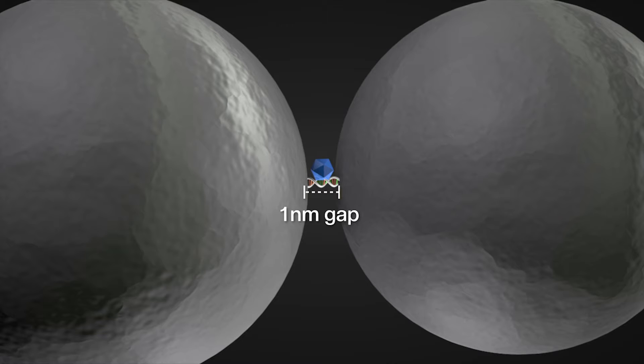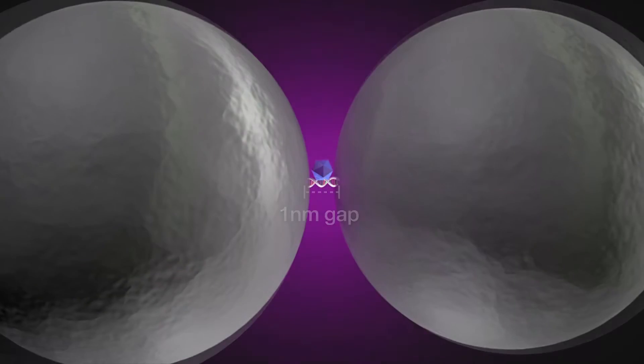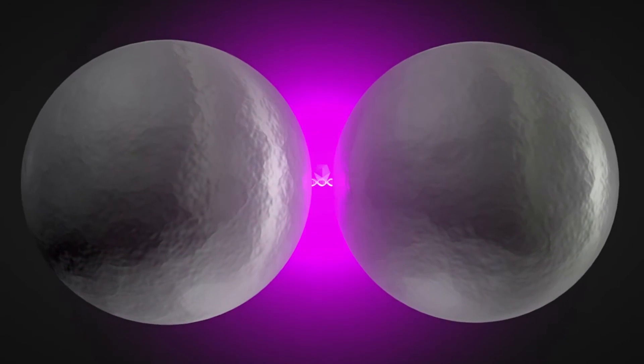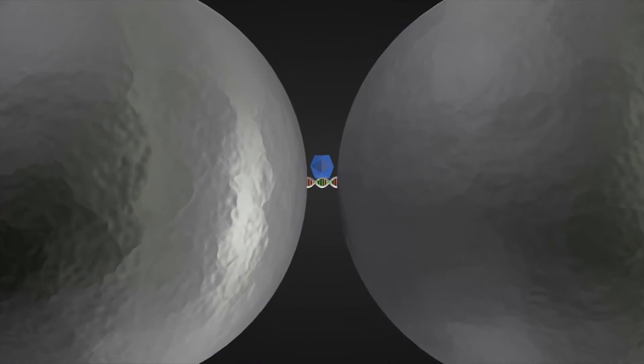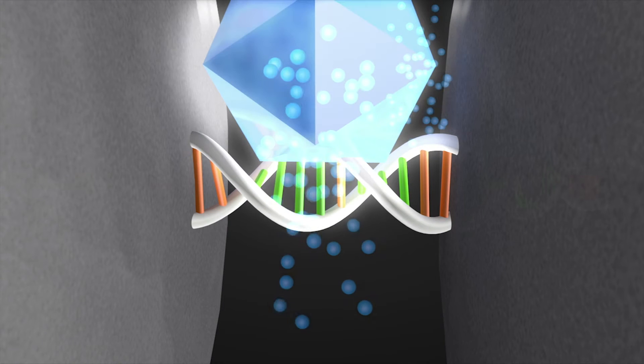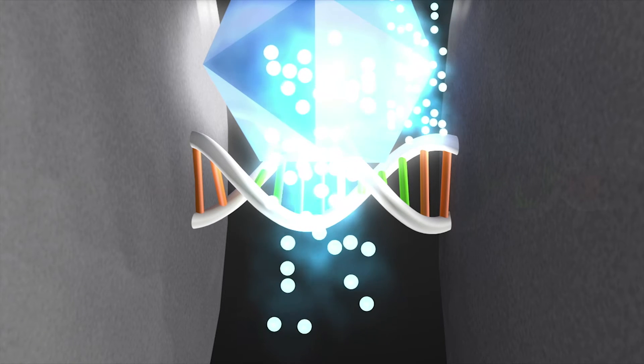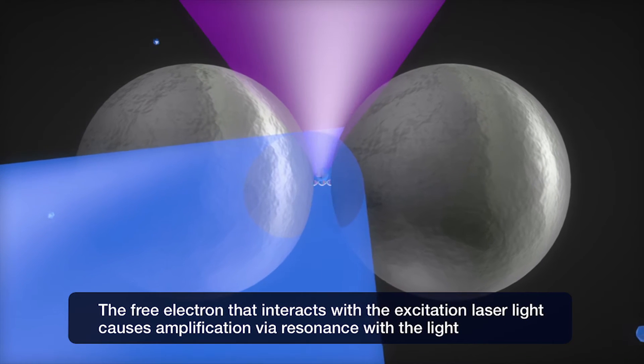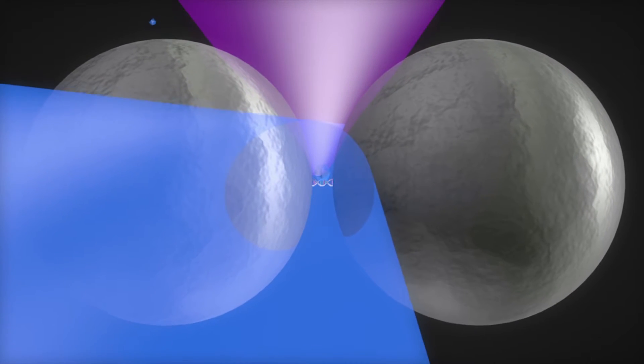This nanogap-sandwiched Raman dye molecule generates drastically amplified SERS signal to show single molecule sensitivity. This drastic amplification is originated by surface plasmon and gap plasmon resonance between free electrons on these noble metals and excitation laser.